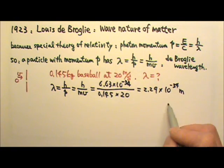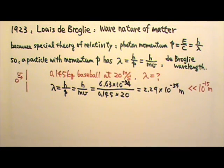That's a very small wavelength. If you remember, in order for the effect of interference or diffraction to be observable, the slit distance or the slit size have to be around the size of the wavelength.